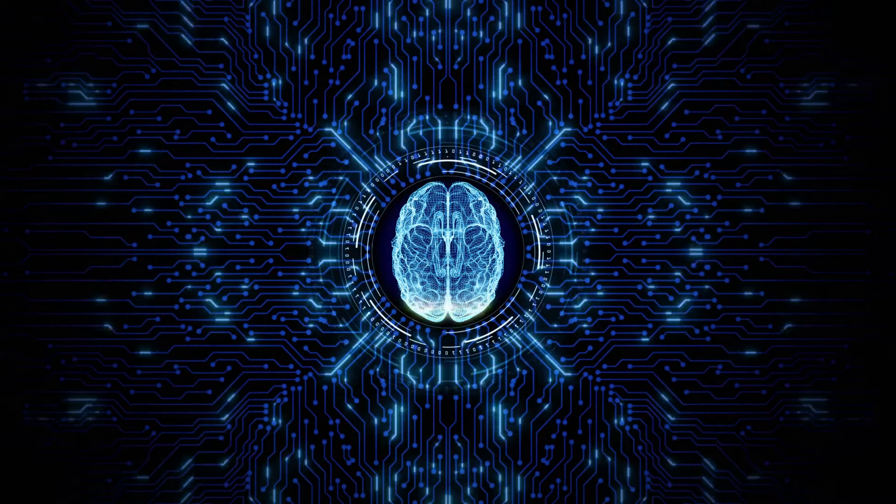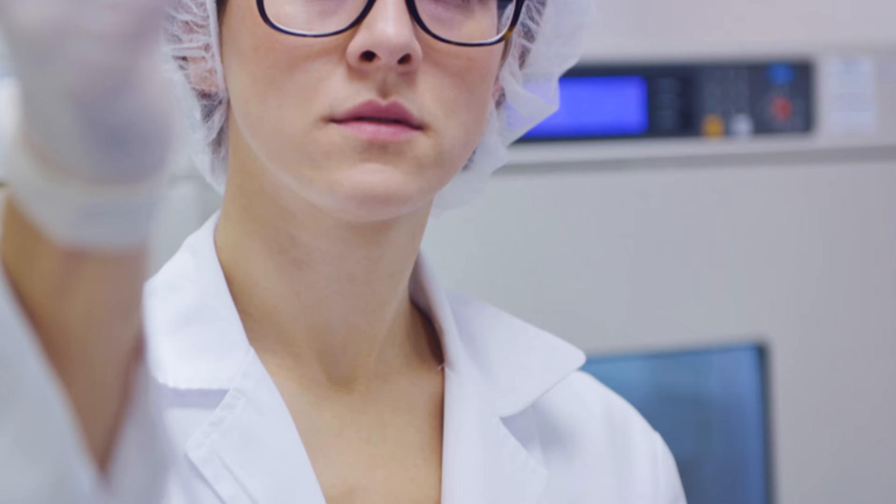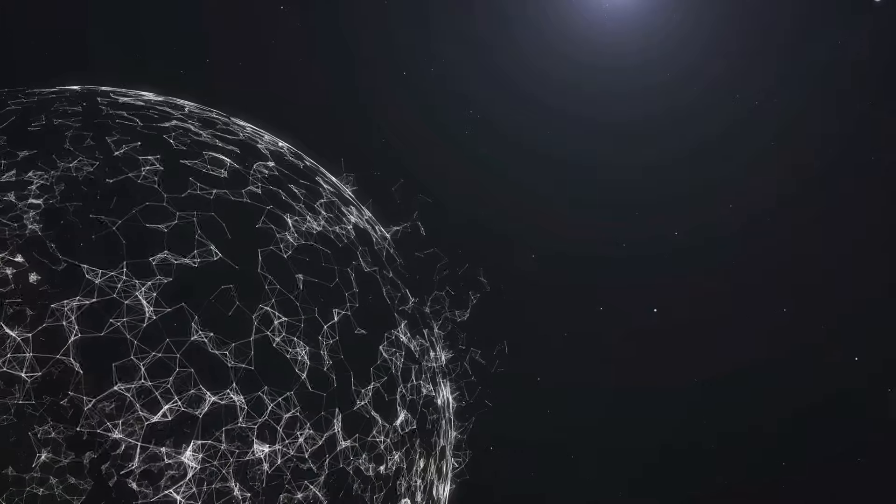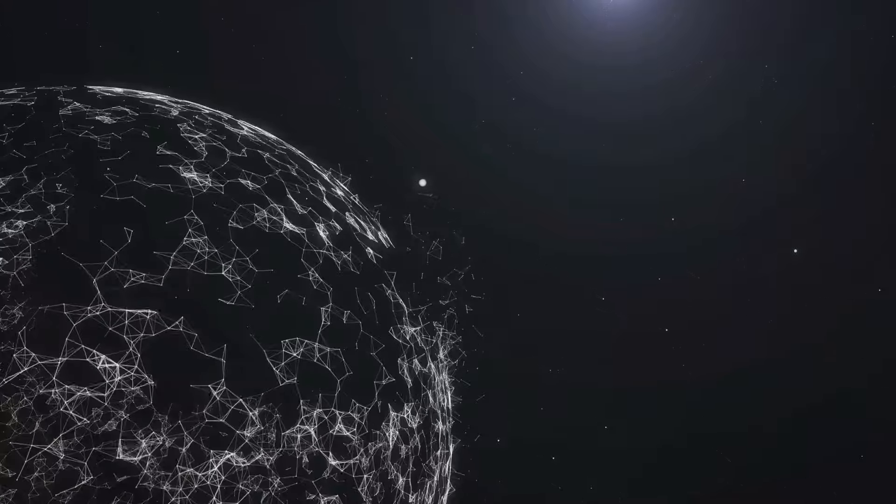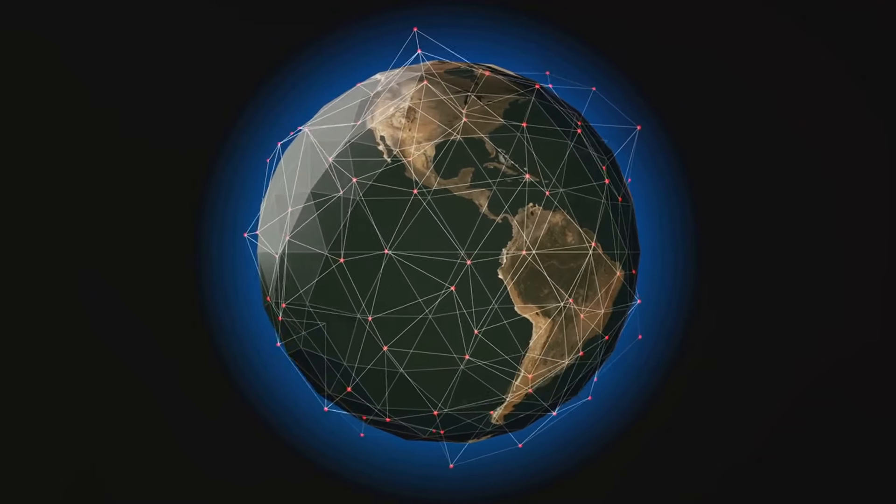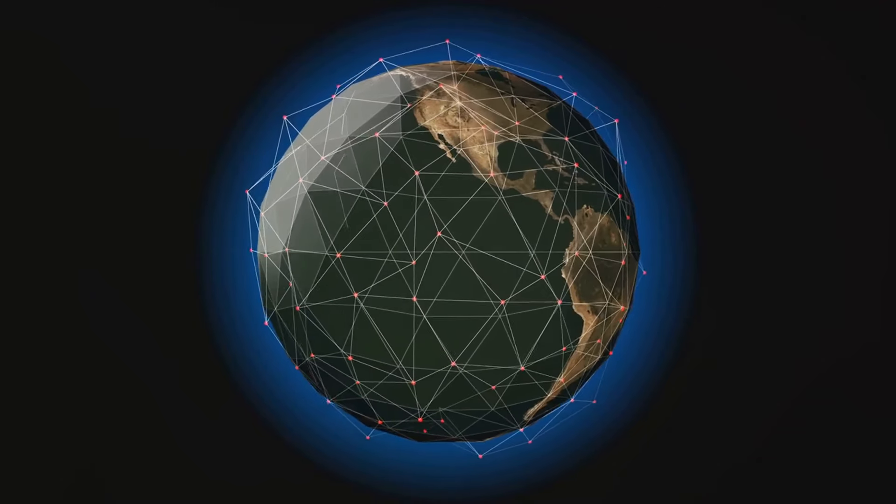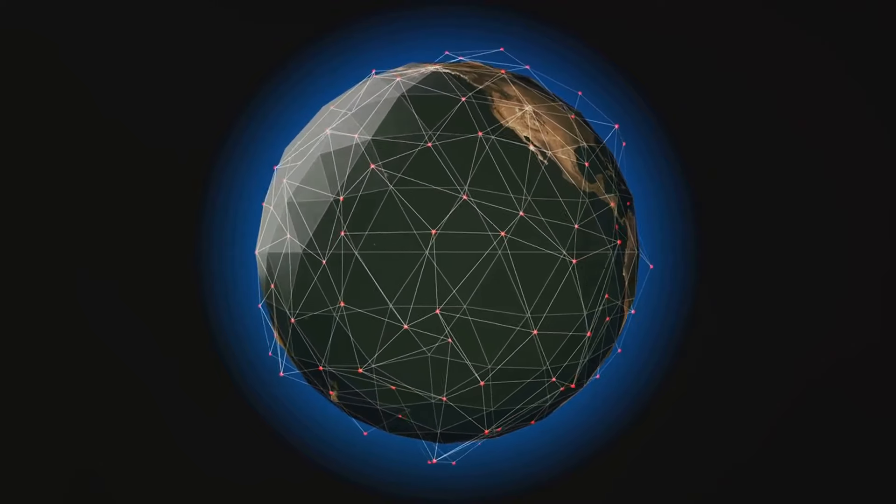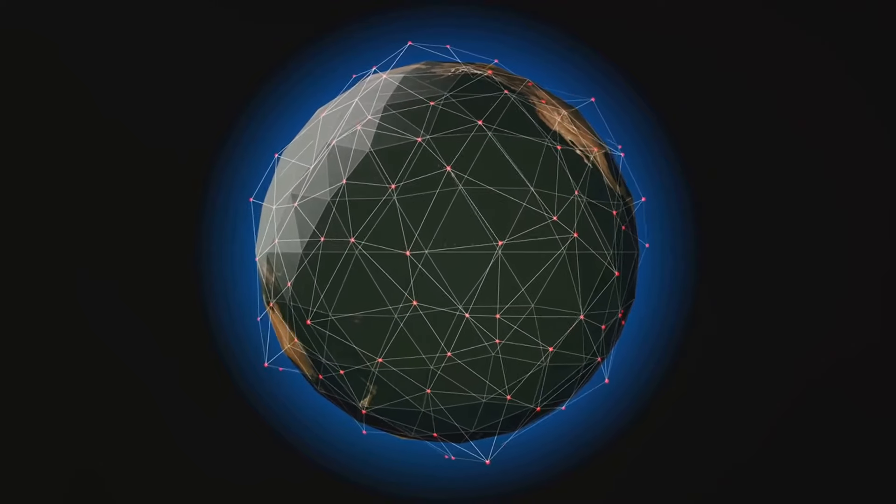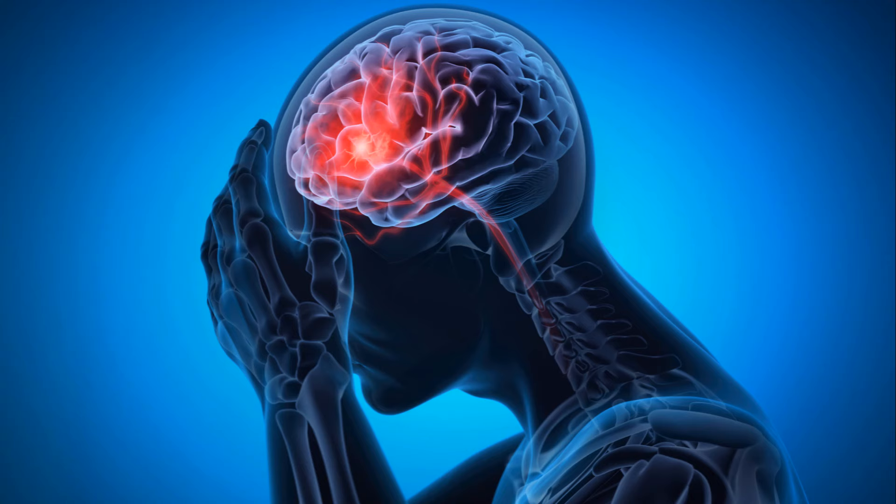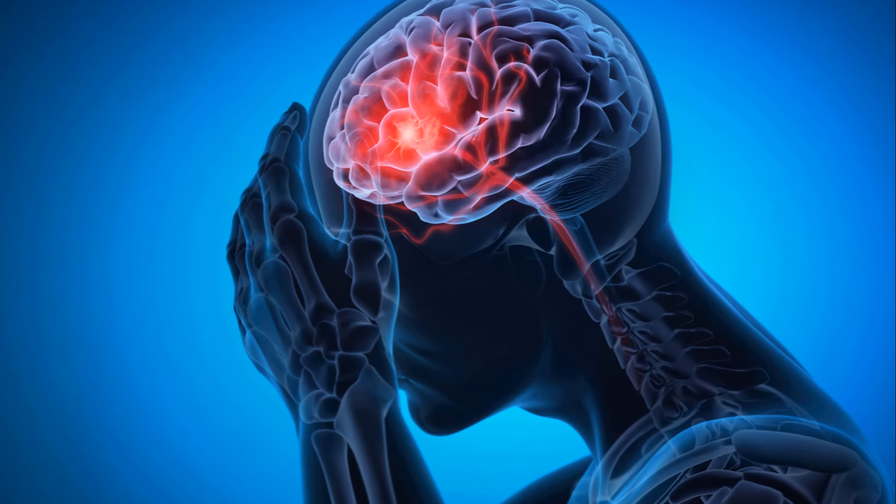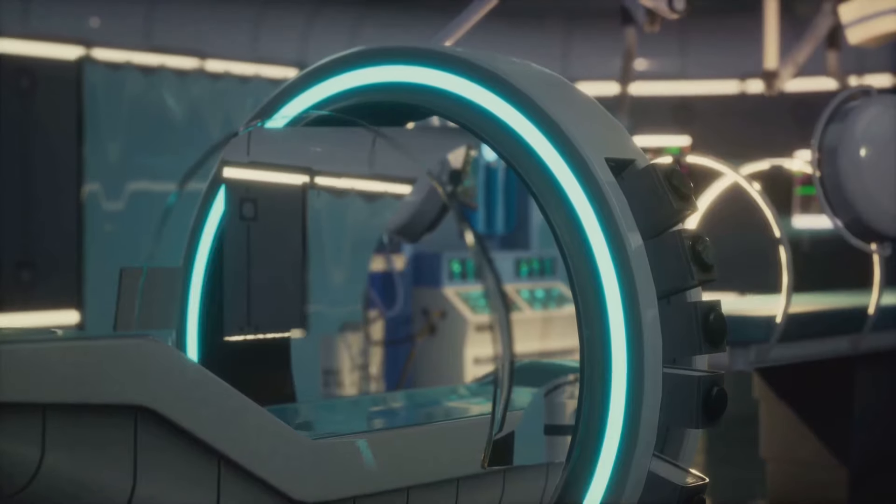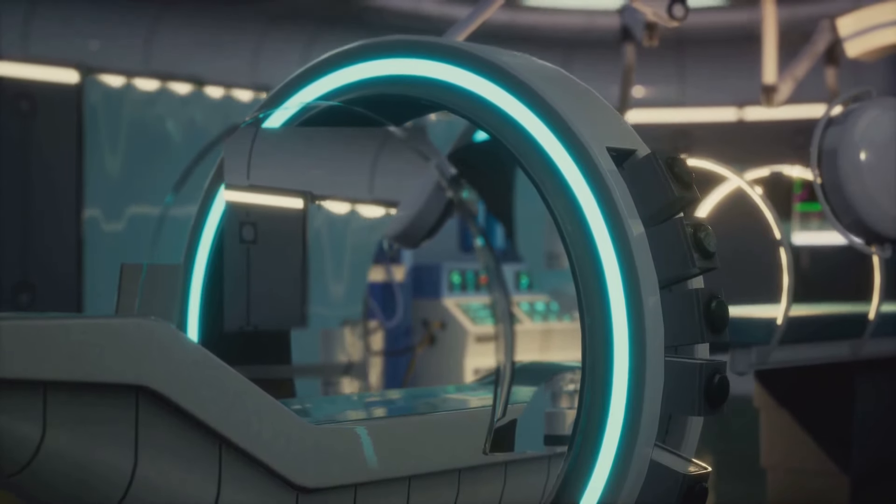The Global Consciousness Project, or GCP, was a direct offshoot of the ideas and technologies developed at PEAR. It represents an ambitious attempt to detect interconnectedness and coherences in human consciousness on a global scale. The project uses a worldwide network of random event generators to test the hypothesis that significant global events affect the randomness of data produced by these devices. This section discusses the scope, methodology, and preliminary findings of the GCP, exploring how it aims to extend PEAR's research into broader, more globally impactful phenomena.